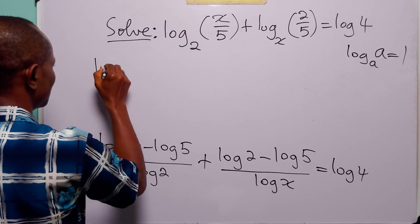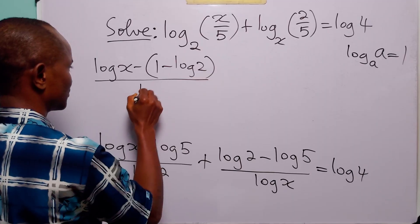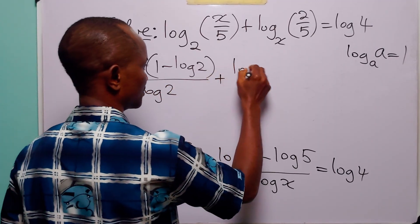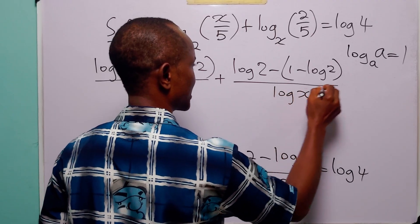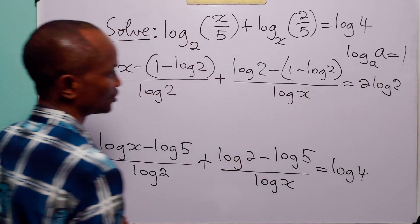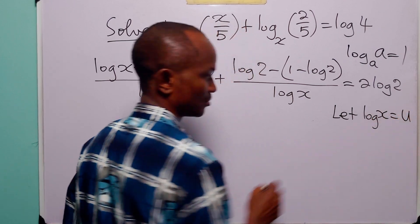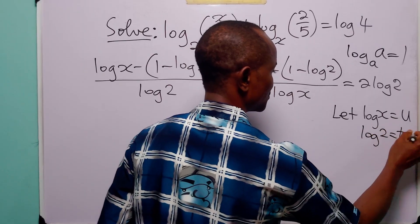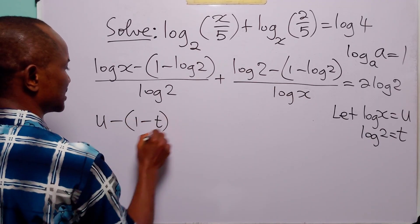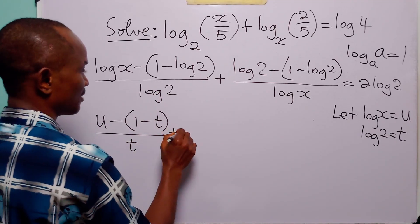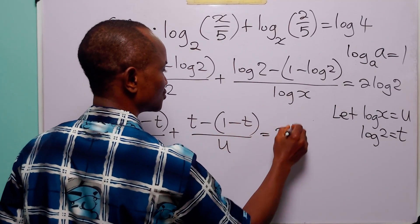Rewriting the equation we have: (log x minus (1 minus log 2)) over log 2, plus (log 2 minus (1 minus log 2)) over log x, equals 2 log 2. To simplify, let log x equal u and log 2 equal t. With this substitution the equation becomes: (u minus 1 minus t) over t, plus (t minus 1 minus t) over u, equals 2t.